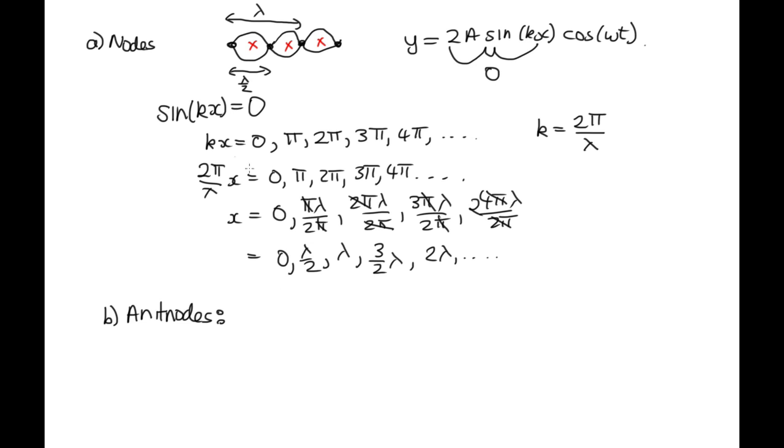The longer way to do it is to realize that the antinodes, these will occur when this term is maximum. And that will be when sin(kx) is equal to plus or minus 1.